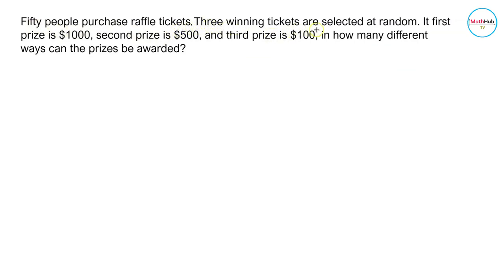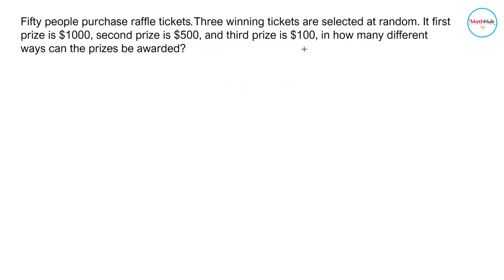Now for the next problem: 50 people purchase raffle tickets and three winning tickets are selected at random. If the first prize is $1,000, the second prize is $500, and the third prize is $100, in how many different ways can the prizes be awarded? Notice that the winning tickets have designations — first, second, or third prize — so the order does matter.